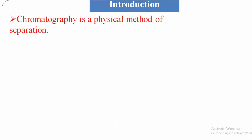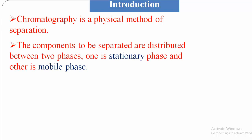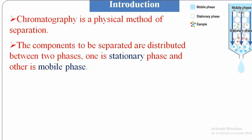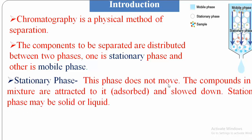Introduction: chromatography is a physical method of separation. The components to be separated are distributed between two phases — one is the stationary phase and the other is the mobile phase. In this diagram, the stationary phase stays in one position while the mobile phase moves. The mobile phase moves in the downward direction and the samples are present. The stationary phase does not move. The compounds in the mixture are absorbed on the stationary phase and slowed down. The stationary phase may be solid or liquid.